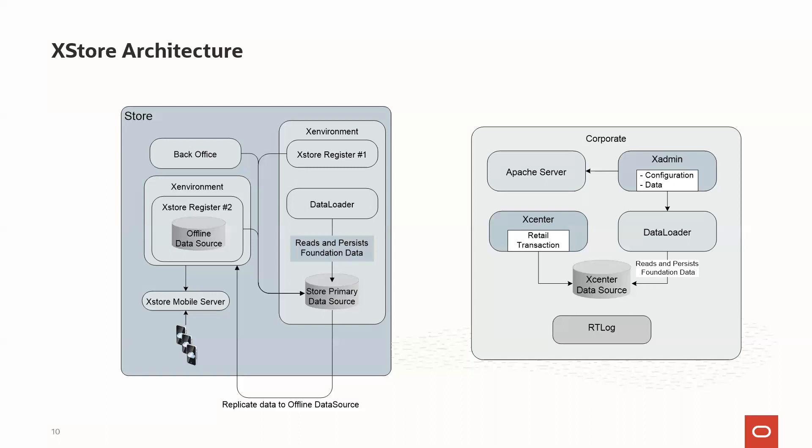With this, it's very clear how the Access Store architecture looks. Any time during implementation, if there is any confusion about which application is sitting on which side, you can refer to this picture to remember which application is sitting where and how they are communicating with each other. With this, we have concluded the Access Store architecture. Thank you.